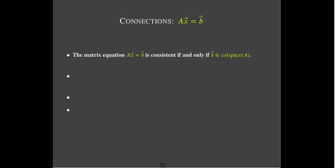The matrix equation Ax equals B is consistent if and only if B belongs to the column space of A — that is, B can be written as a linear combination of the columns of A. That's why we emphasize this column-centric view of matrix-vector multiplication: A times X is a linear combination of the columns of A, with the coefficients being the components of X. So if B can be written as a linear combination of the columns of A, the system is consistent and the solution vector consists of those coefficients.